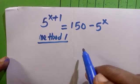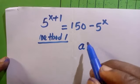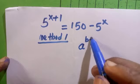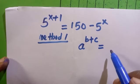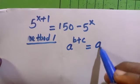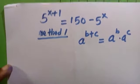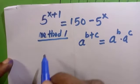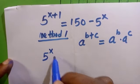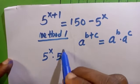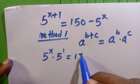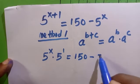From the left hand side we consider the law of exponents, which is if you have a^(b+c) equals a^b times a^c. So by applying it here we have 5^x times 5^1 equals 150 minus 5^x.